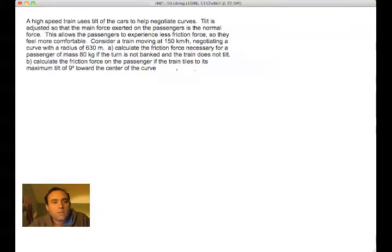So we're going to look at a train that has a velocity of 150 kilometers per hour. The radius of the curve that it's going through is 630 meters. We're going to calculate the friction necessary for the passenger or passenger of 80 kilograms if the turn is not banked and it doesn't tilt. And then the second part of the problem, we're going to calculate the friction force necessary, or the friction force in the passenger rather, if the train does tilt 9 degrees towards the curve.